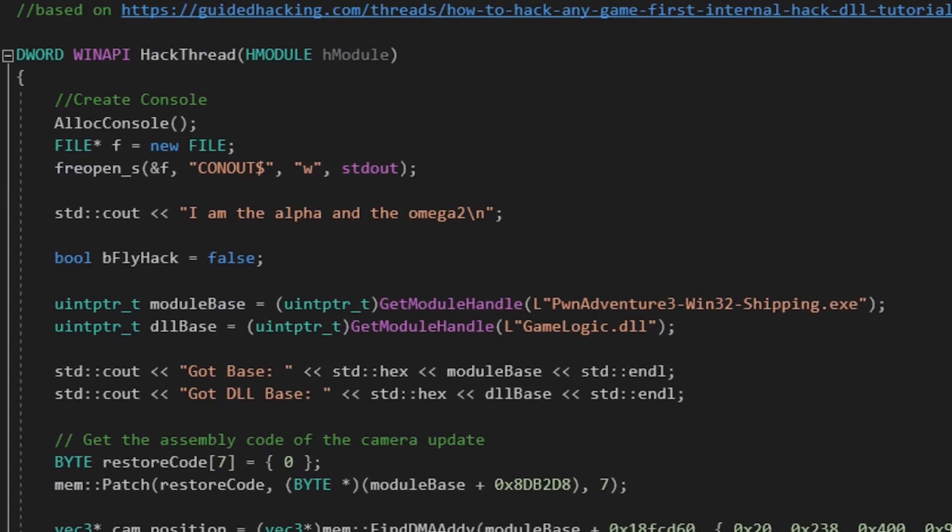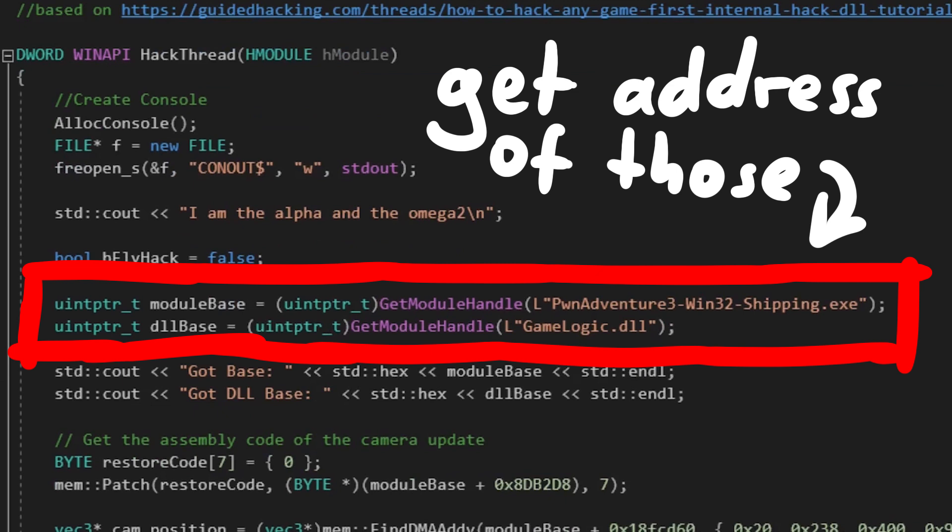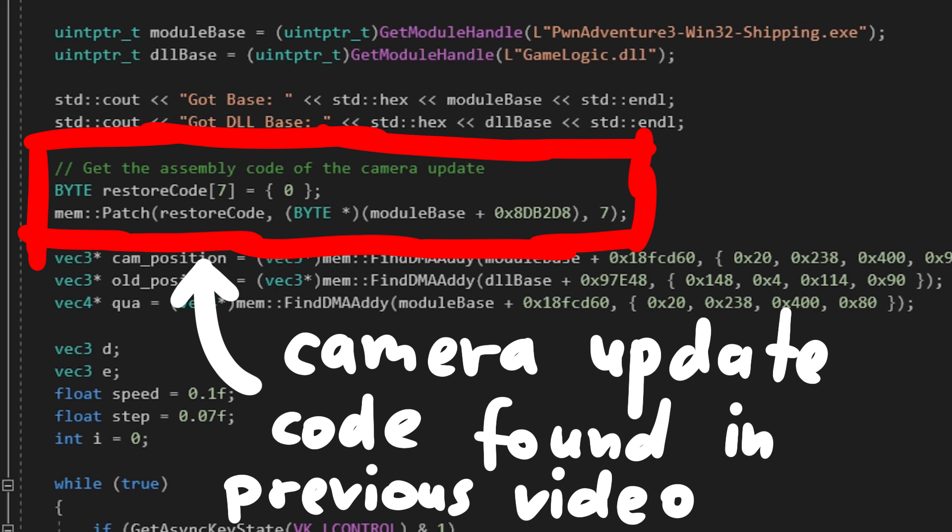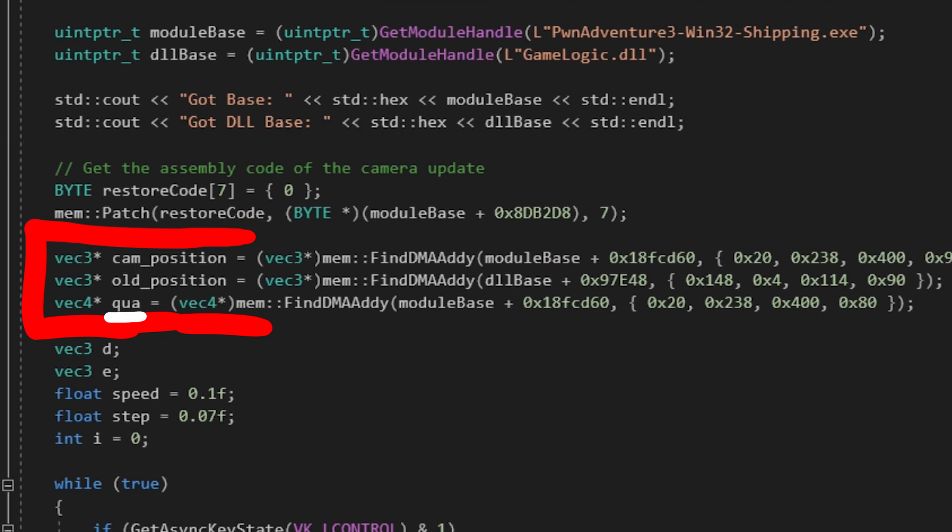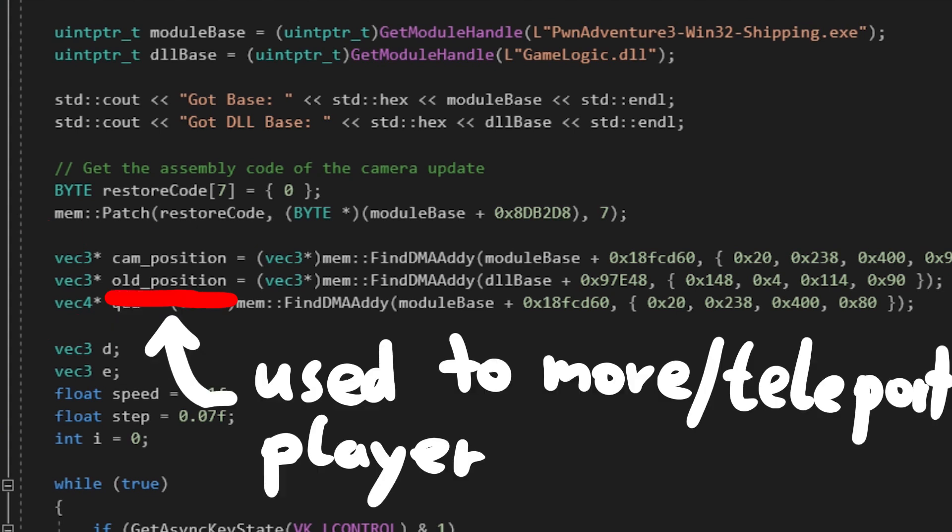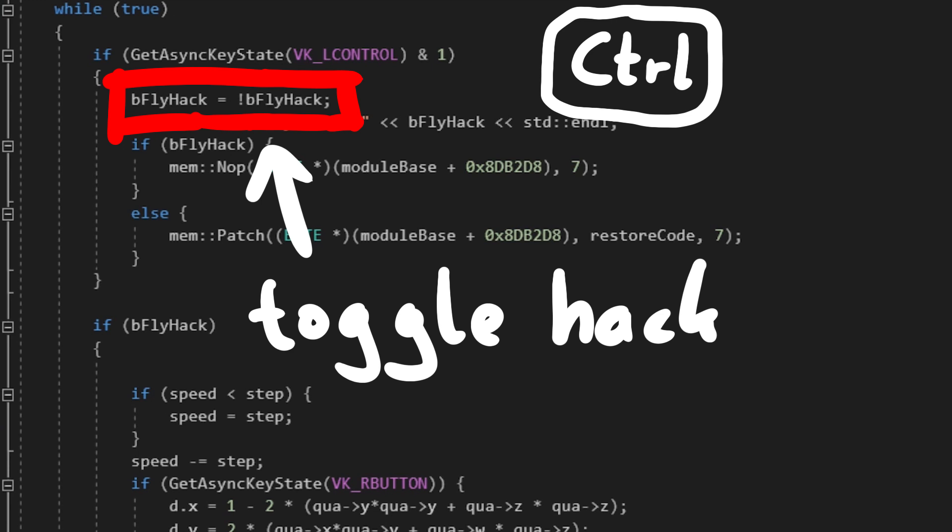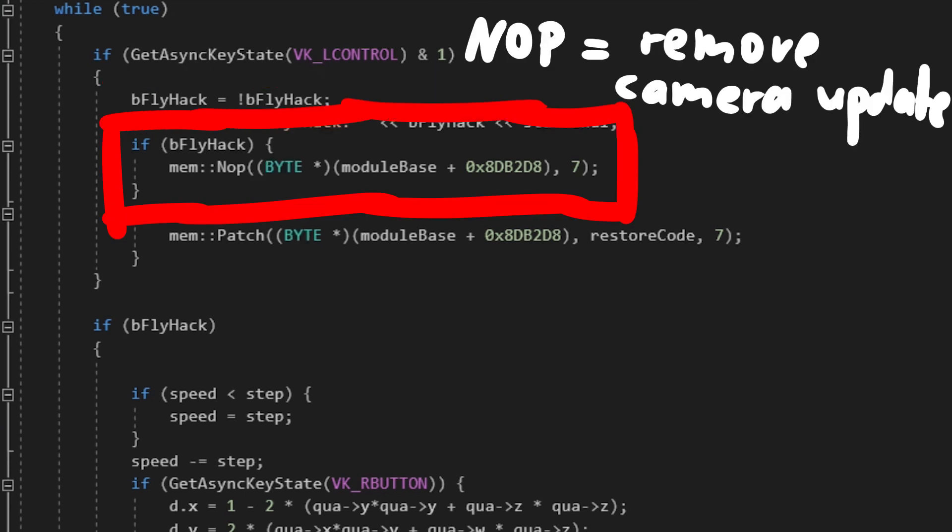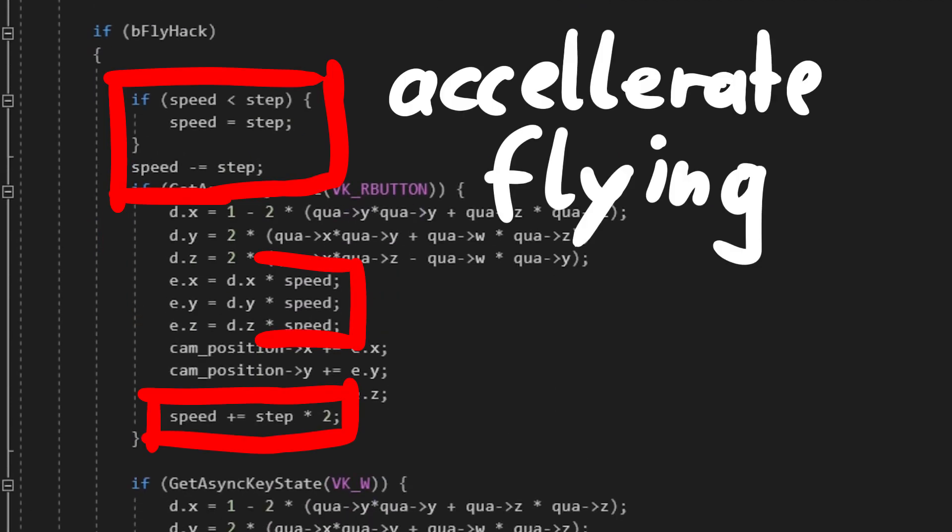I won't bore you now with the programming part, but here is the finished code. In this version we are now getting the base of the dll and the exe. Here we use the patch function to actually copy the assembly code of the camera update to the restore code array. The reason for that is that when we knob it to fly around, we want to be able to restore it too. And then here we get the camera position and the quaternion. But we also get the player position from the dll. This is the one we can use to actually teleport the character around and not just move the camera. With ctrl left we can still enable or disable the hack, and then it either knobs out the camera update code or restores the original code. I've also added a speed up functionality the longer we move, which goes down again if you don't move.